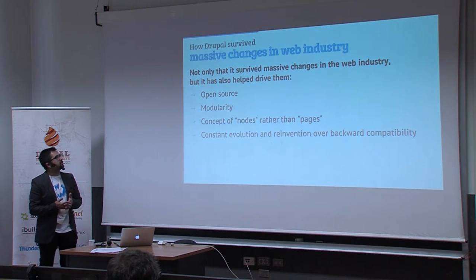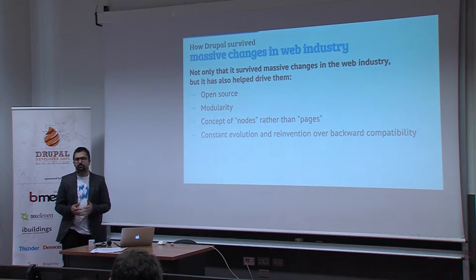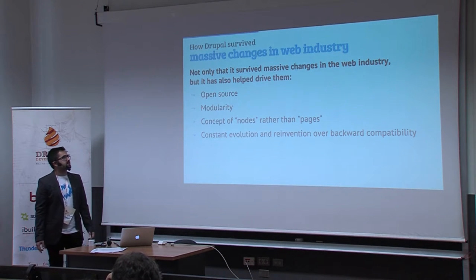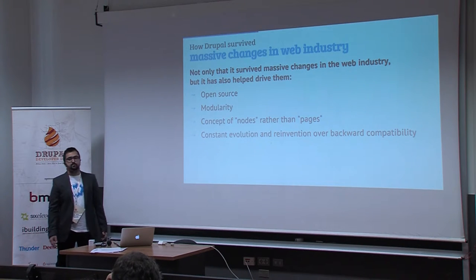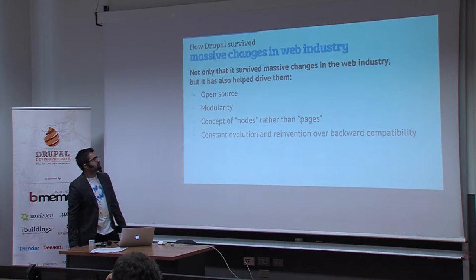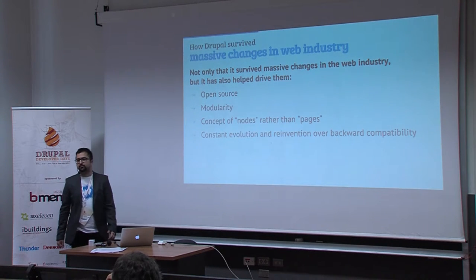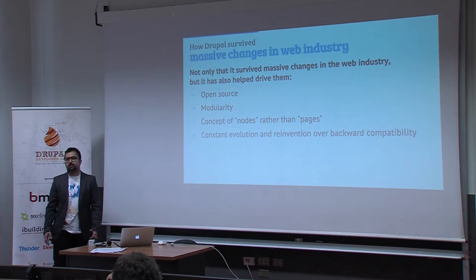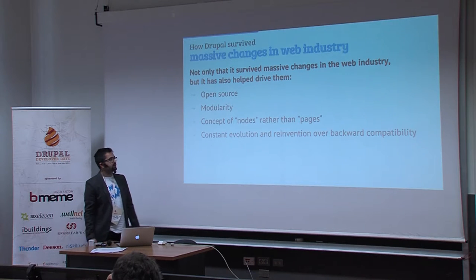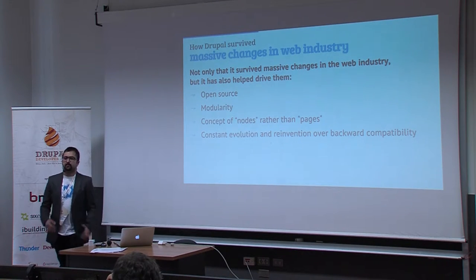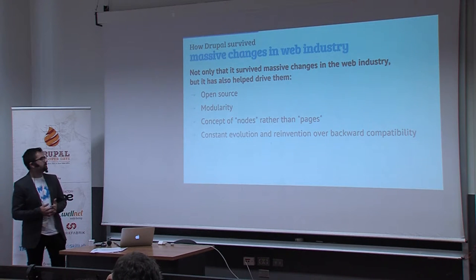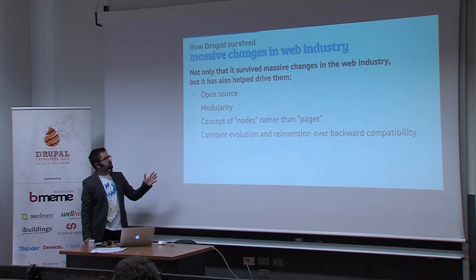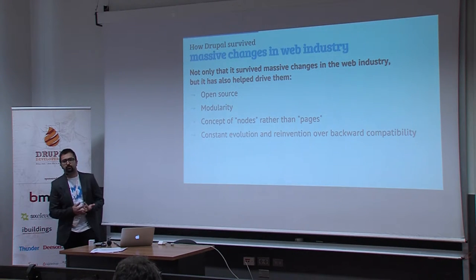So how come Drupal is still alive and others aren't? Looking back 15 years in history, I think Drupal got four key concepts that not only made it survive but also helped drive the industry. First, it's open source — Drupal is GPL licensed, and this set the cornerstone for the community we have today. Then it's modularity — the concept of hooks and modules that Drupal got from the very beginning, which became commonplace on today's platforms. Then the concept of having nodes rather than pages, and finally Drupal's constant evolution and reinvention over backward compatibility.